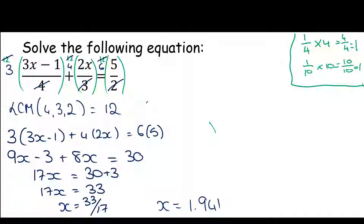Example four — another equation with fractions, but this time two of the denominators contain variables, so they have an algebraic denominator with an x in the bottom. The same method applies: we want to get rid of the fractions. To get rid of 1/(x + 1) I multiply by (x + 1); to get rid of 4/(2x − 1) I multiply by (2x − 1); and to get rid of 5/3 I multiply by 3.